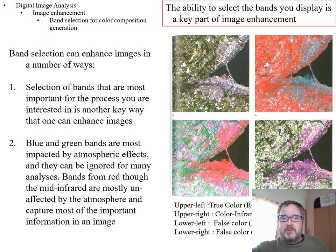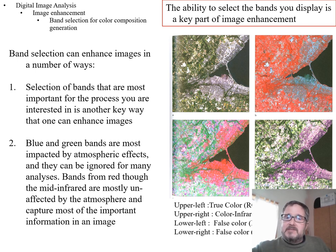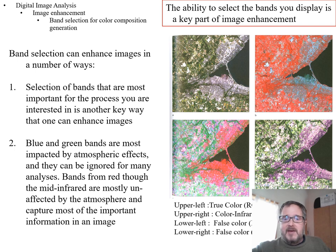For instance, we know that blue and green are bands most impacted by atmospheric effects, and for many purposes they can be ignored. If you're doing water analysis, you'll want to keep blue in. But if you're interested in soils or vegetation, blue is not that important. Bands from red through the mid-infrared are mostly unaffected by the atmosphere and capture most of the important information in an image. The key features are generally not in blue and green.